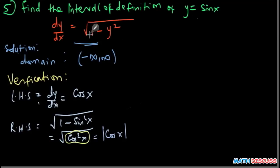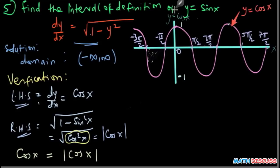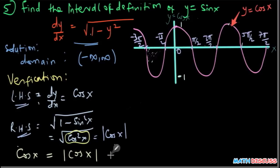For y equals sine x to be a solution of this differential equation, the left-hand side and the right-hand side must be equal. That is, cosine x must equal the absolute value of cosine x. This means we need all values of x for which cosine x is positive.